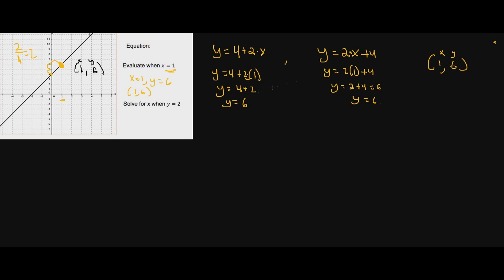Now: solve for x when y equals two. Notice in this scenario we're no longer plugging a number in for x — we want to plug in a number for y. Let's look at the graph. On the y-axis, two is right here. If you draw a horizontal line, it touches the graph right here. When your y value is two, your x value is negative one.